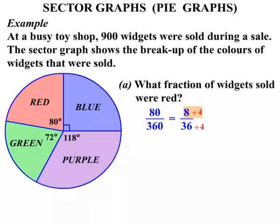Can we break that down any further? Can you think of a number that divides into both? What about 4? Let's divide top and bottom by 4. 8 divided by 4 is 2, 36 divided by 4 is 9. So the fraction is 2 ninths, in simplest form.